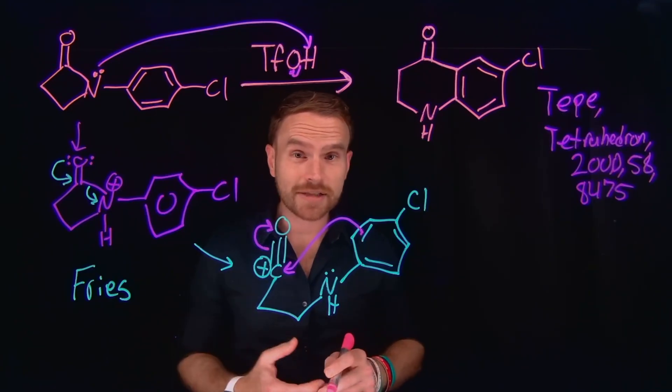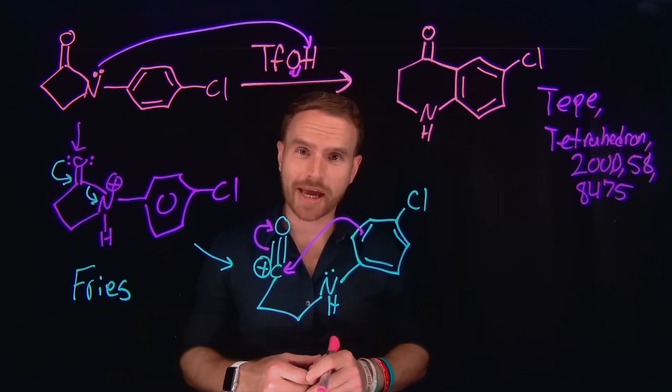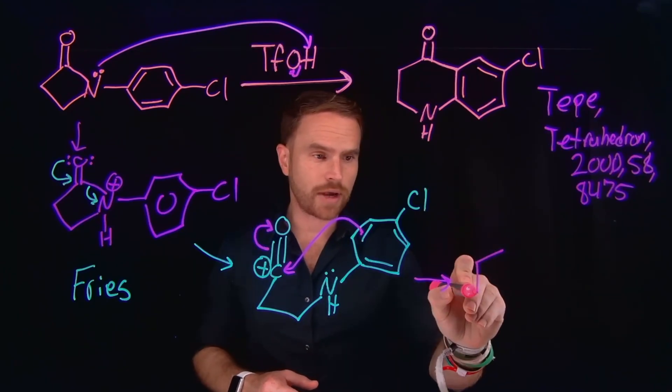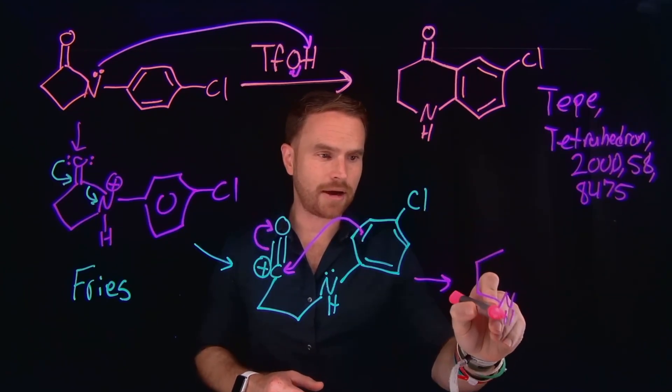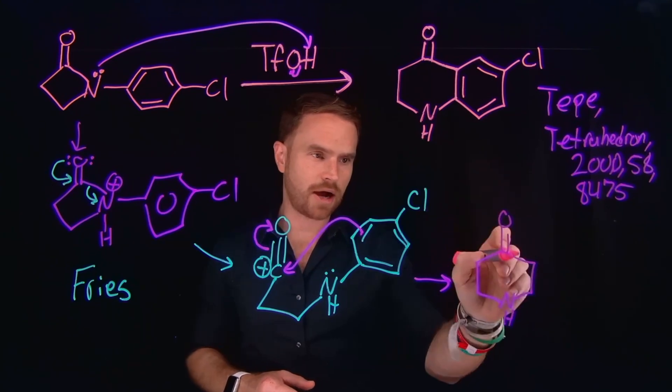In other words, this is another form of a Friedel-Crafts acylation that you likely learned about in organic chemistry. What we've now generated is an arenium ion located at the fused ring position, and here we have that carbon to oxygen double bond.